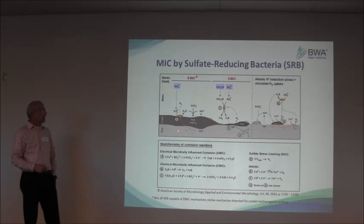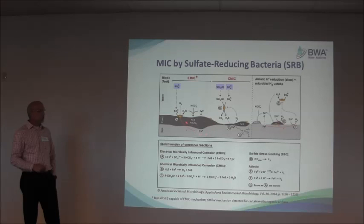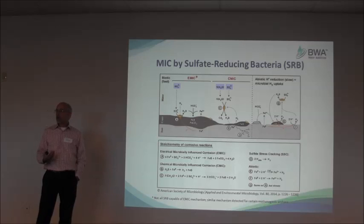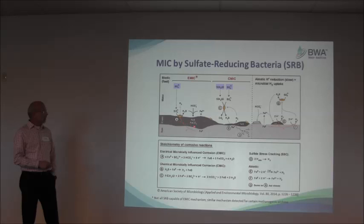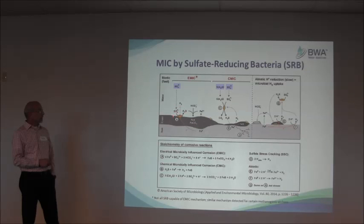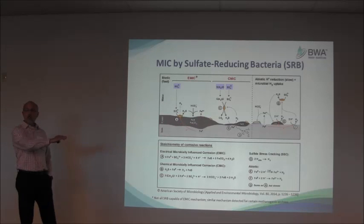The idea now is that there are two ways sulfate-reducing bacteria can cause MIC. One is that they use electrons from the corrosion process directly — a certain subset of sulfate-reducing bacteria can actually absorb these electrons as the metal corrodes and use those electrons to metabolize, producing hydrogen sulfide, which then creates a corrosion product crust that coats the surface.